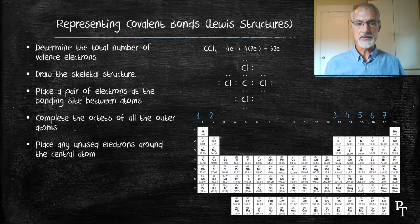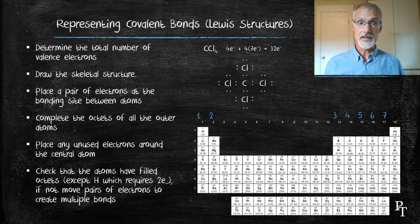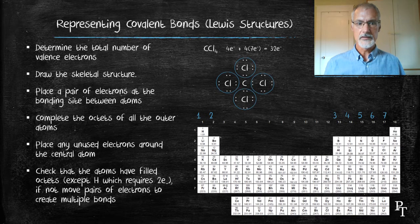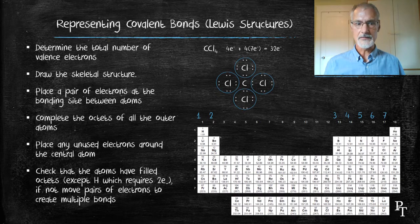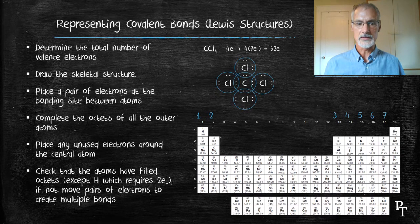The next thing I'm going to do is to check the octets of all of the atoms. All of the octets with the exception of hydrogen, because hydrogen's just happy with two. So looking at the chlorines, they all have eight. The central carbon has eight. So this is a complete Lewis diagram or Lewis structure for this molecule.